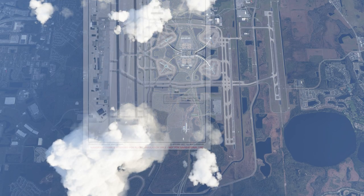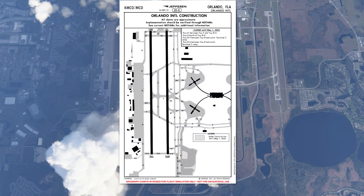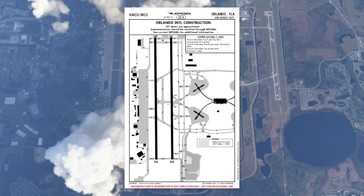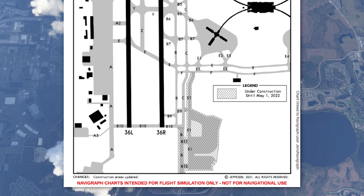Change is always a constant, especially at an airport — pretty much everything is under construction at some point. As you can see on this page, there are multiple shaded areas with cross-hatching, which indicates construction zones.